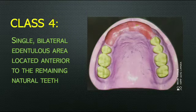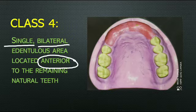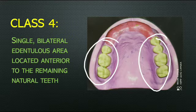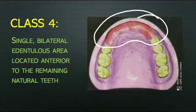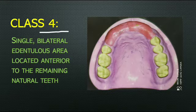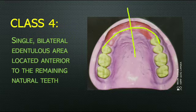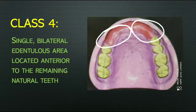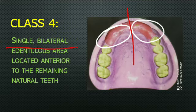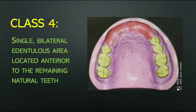Class four is a single bilateral edentulous area located anterior to the remaining natural teeth. The edentulous space is present anteriorly to the natural teeth, unlike the previous classes where it was posterior. This edentulous space crosses the midline, so it is single yet bilateral — it is on both sides but since it crosses the midline, it is called a single bilateral edentulous space located anterior to the remaining teeth.